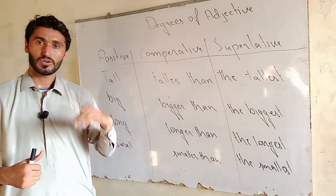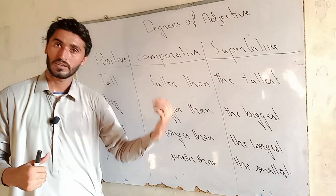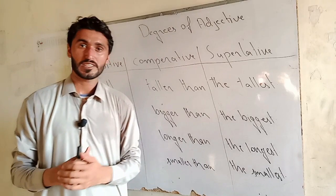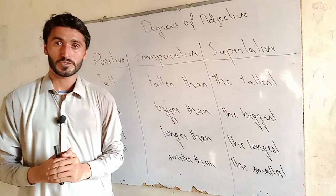Another adjective is small. She has a small house — there is no comparison. Salma has a smaller house than her — there is comparison of two houses. A friend has the smallest house in the society — there is comparison of three or more than three houses.